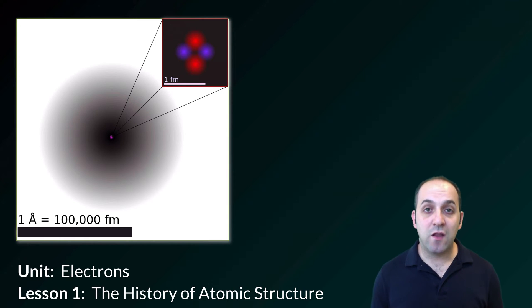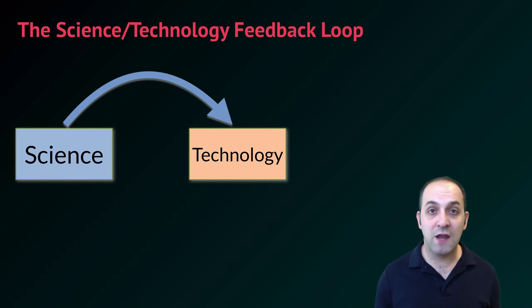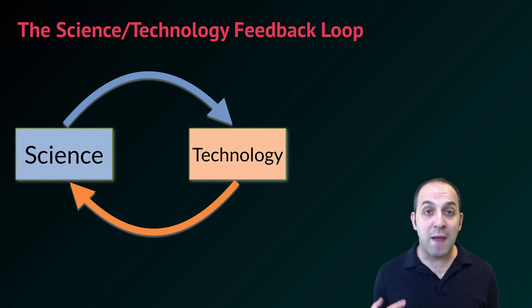We're going to begin by looking at the history of atomic models and how our understanding of atoms has changed over time. Before we do, let's talk about science and technology, or science and applied science. There is a feedback loop that exists between science and technology. Science leads to advances in technology, and those advances in technology lead to additional advances in science. Both benefit each other. It's what we call a positive feedback loop in systems thinking.